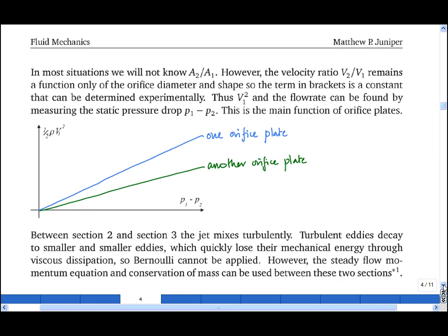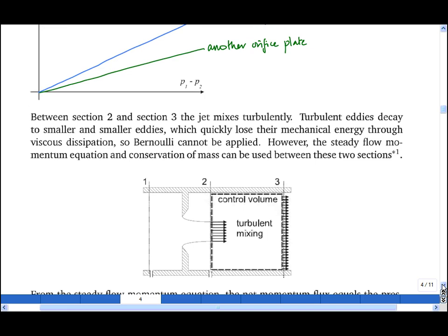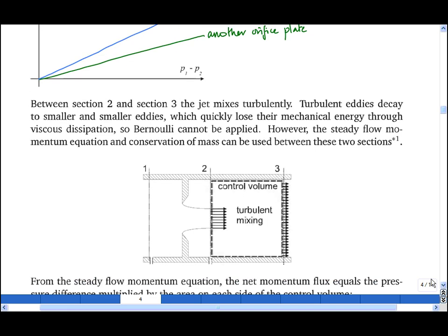But we haven't yet worked out what the total pressure drop is across the orifice plate. For that we need to consider the flow between 2 and 3. Remember that inside this control volume there's a lot of turbulent mixing, therefore a loss of mechanical energy, and we cannot use Bernoulli's equation. However, we can apply a steady flow momentum equation.